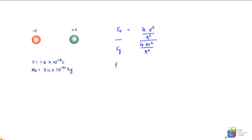We know that the value of k is 8.99 × 10⁹ N·m²/C², and the charge on an electron is 1.6 × 10⁻¹⁹ coulombs.